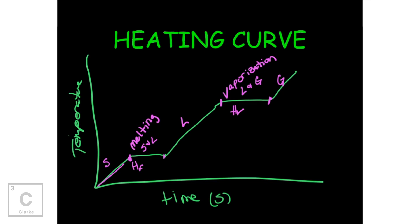Let me point out something else on this graph: kinetic energy. This is the energy of motion. Anytime you have a positive slope, that is going to represent kinetic energy. Anytime we have a flat, that's going to represent potential energy. On the slant we have kinetic energy. On the flat — potential energy — meaning all of the energy is going into breaking the bonds and the temperature is not rising. Once all of the intermolecular forces are broken, the temperature can rise again as kinetic energy. Then at the vaporization point, all of that energy is breaking intermolecular forces — potential energy — because temperature is not rising. And then when it's all gas and the temperature can rise again, we have kinetic energy again.